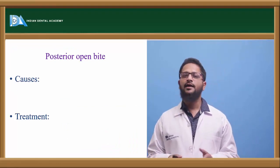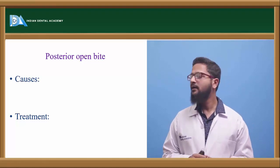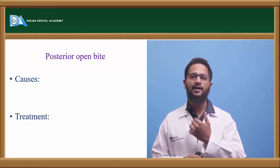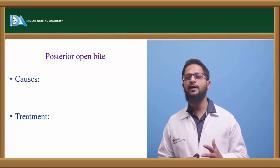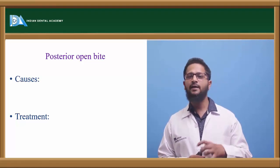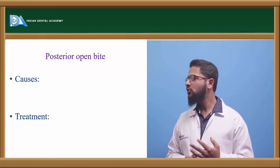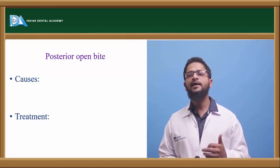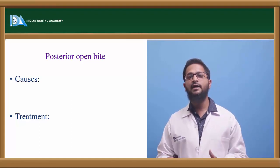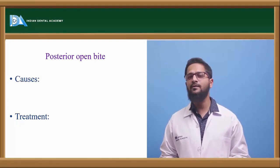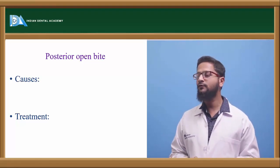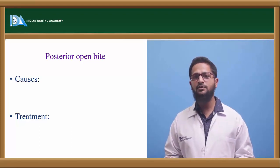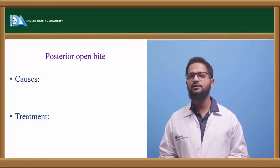Next is posterior openbite. Posterior openbite mostly occurs because of lateral tongue thrust habit, where patients usually thrust the tongue laterally. Apart from this, posterior teeth may not erupt properly because of certain interruptions, and sometimes ankylosed posterior teeth may be present. We have to find out the exact etiology. If it is because of lateral tongue thrust habit, lateral tongue spikes can be incorporated and the habit can be intercepted. Sometimes it can occur because of macroglossia, hence partial glossectomy may be required. Under circumstances where ankylosed teeth are present, instead of all these modalities, replacement with prosthetic crowns or composite modifications can be done to restore the proper form of the teeth.